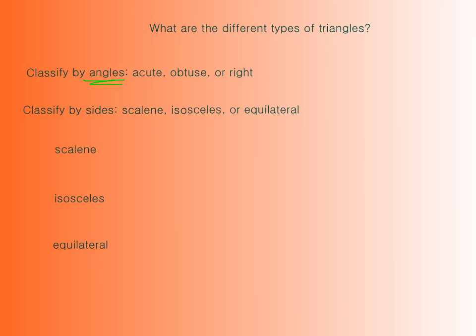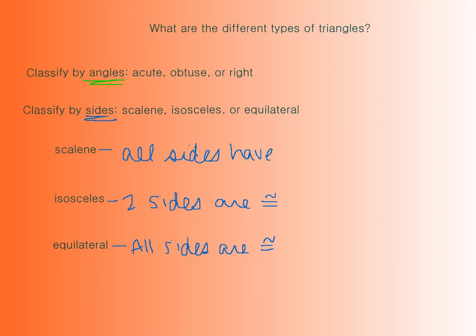The other way that we can classify triangles is by sides. We have scalene, isosceles, or equilateral. So equilateral we've definitely already talked about. This means that all sides are congruent. We've also talked about isosceles, which is where two sides are congruent. And then a scalene triangle is where all sides have different lengths.